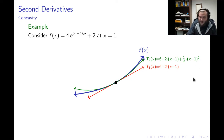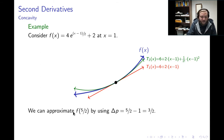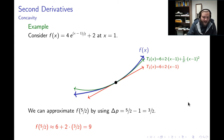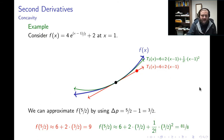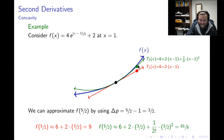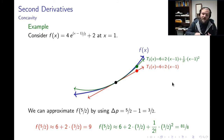With both linear and quadratic approximations in hand, I can approximate f(5/2). Starting at x = 1 and moving to 5/2, my Δp is 5/2 − 1 = 3/2. The linear approximation gives f(5/2) ≈ 6 + 2·(3/2) = 9, plotted as a red dot on the tangent line. Alternatively, the quadratic approximation gives 6 + 2·(3/2) + (1/2!)·(3/2)² = 81/8. Plotting that on the parabola as a green dot, we can see the green dot is actually closer to the function than the red dot — a visual representation of why the quadratic approximation is an improvement on the linear approximation.